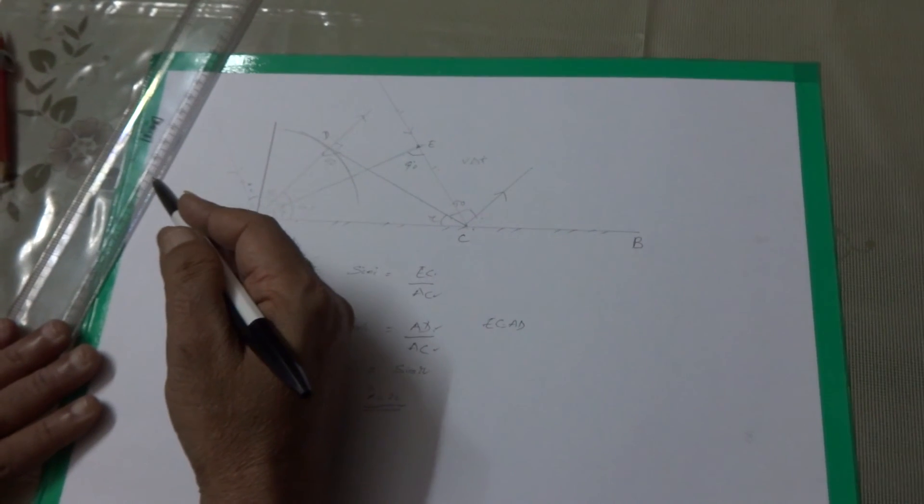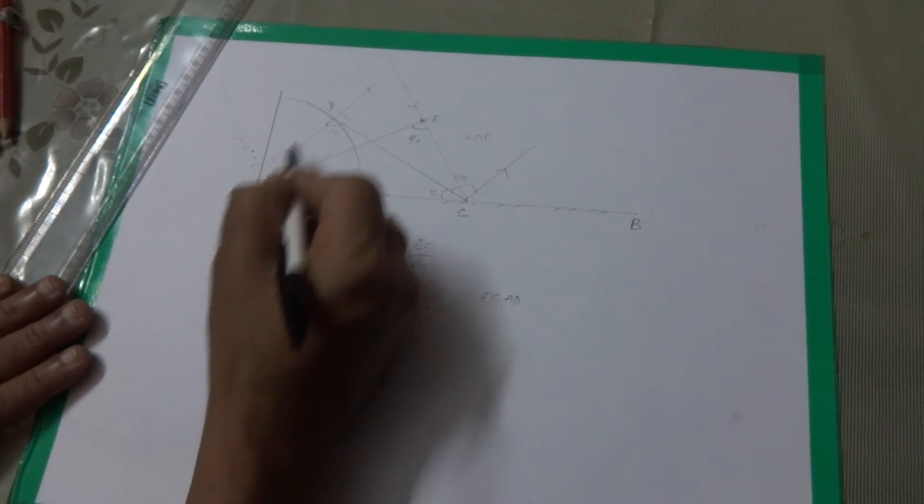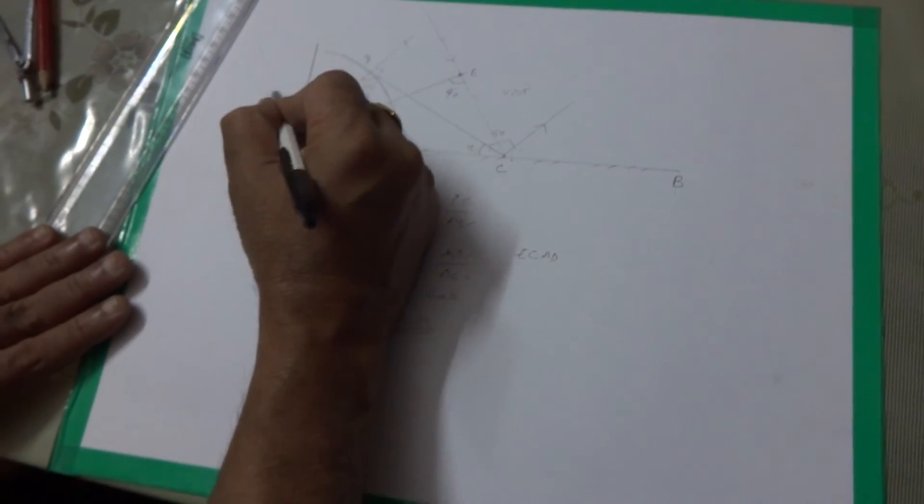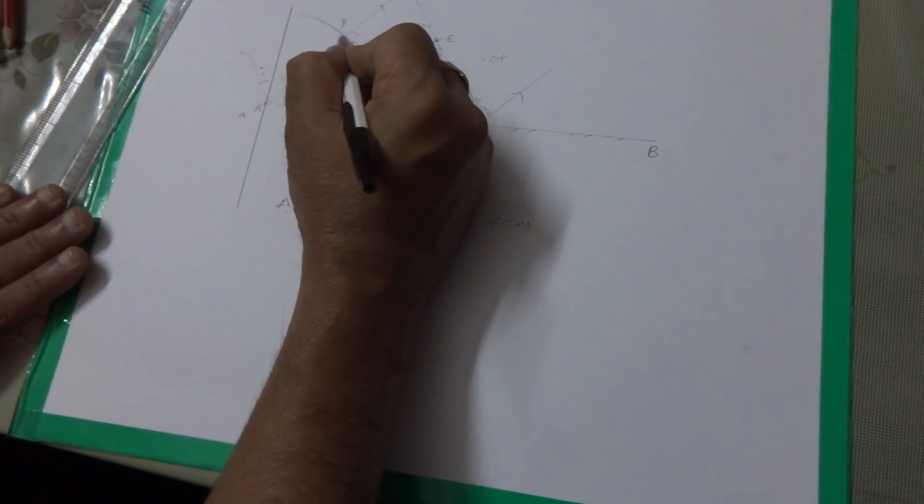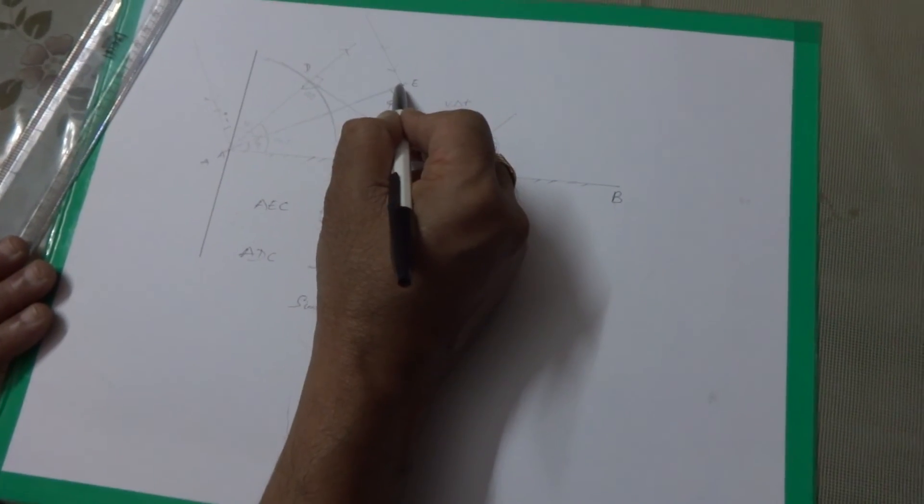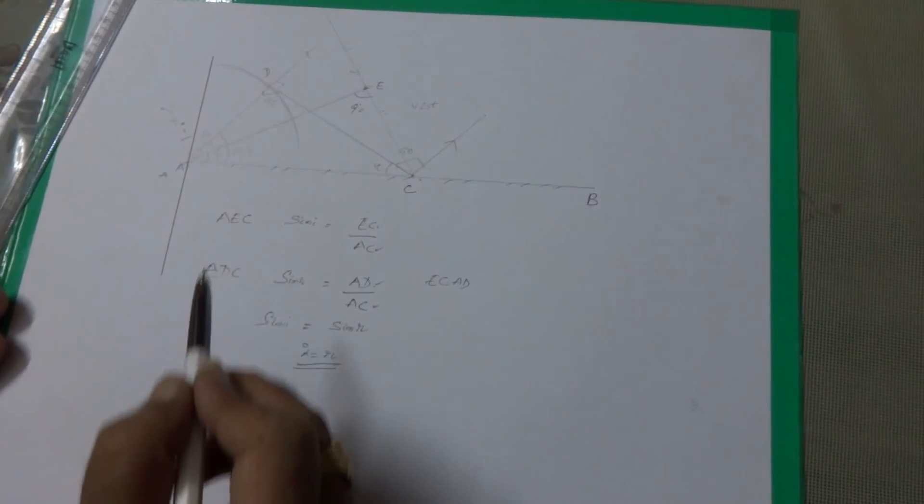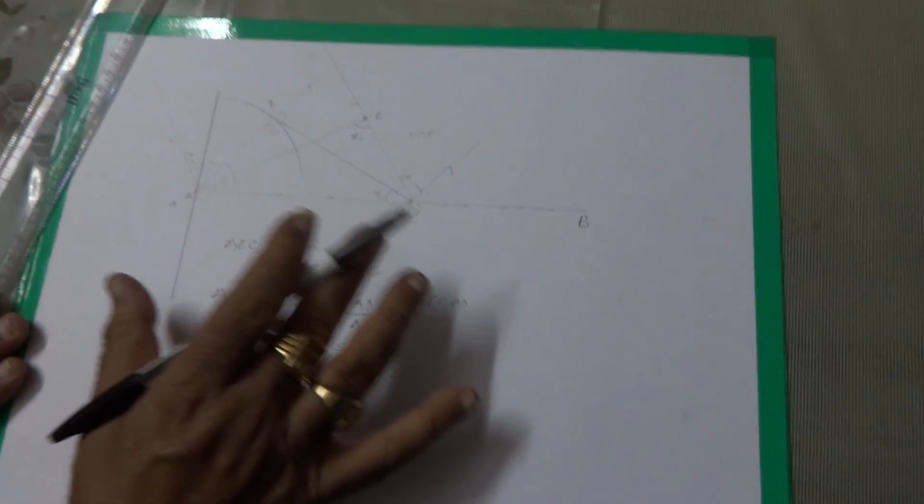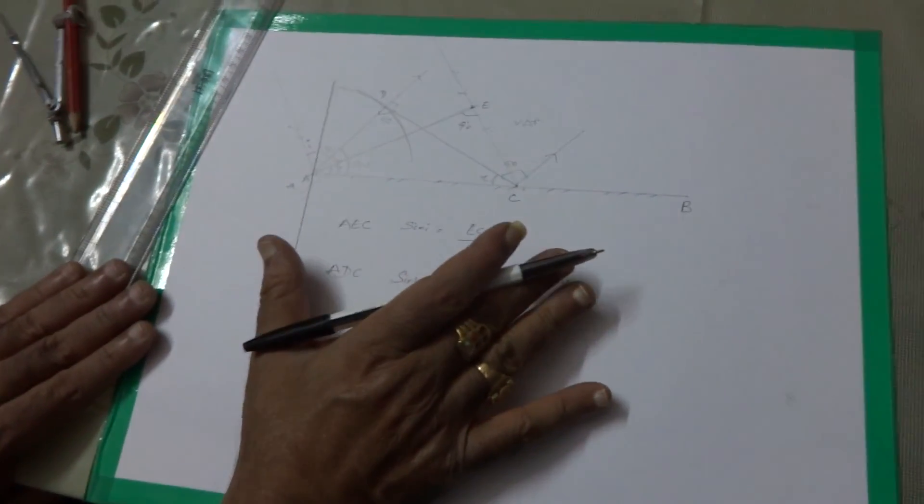Then only the wave can be reflected as a whole. Therefore, when this ray hits and goes up to this point, by the time this ray will come and hit this one. So we can prove this laws of reflection with the help of Huygens wave theory.